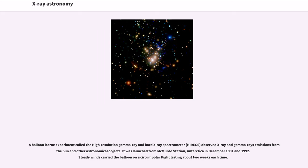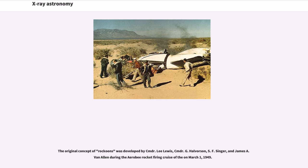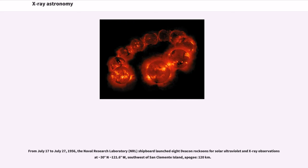A balloon-borne experiment called the High Resolution Gamma Ray and Hard X-ray Spectrometer observed X-ray and gamma ray emissions from the Sun and other astronomical objects. It was launched from McMurdo Station, Antarctica in December 1991 and 1992. The rockoon was a solid fuel rocket that, rather than being immediately lit while on the ground, was first carried into the upper atmosphere by a gas-filled balloon. Once separated from the balloon at its maximum height, the rocket was automatically ignited. From July 17 to July 27, 1956, the Naval Research Laboratory launched eight Deacon rockoons for solar ultraviolet and X-ray observations southwest of San Clemente Island.